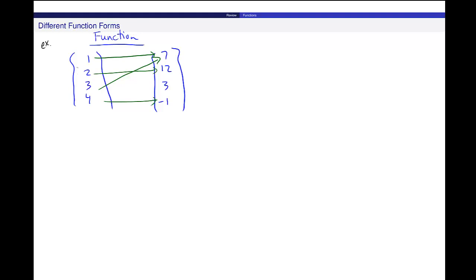I can see 1 is going to 7 and 3 is going to 7. That's fine. As long as when I put 1 in, I know exactly where it's going. And when I put 3 in, I know exactly where it's going.